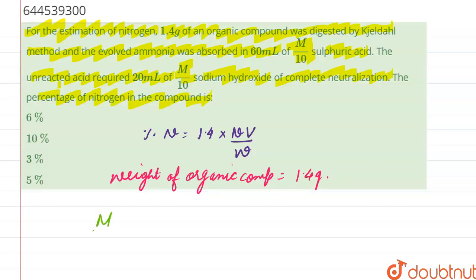And we have also been given that M by 10 of H2SO4 will be equal to 1 by 5 into 60, which is equal to 12 milliequivalent.